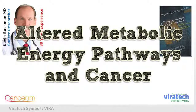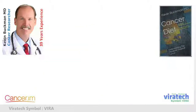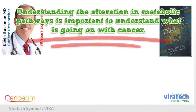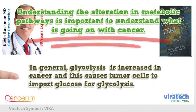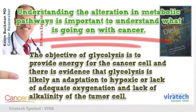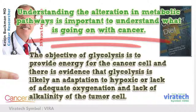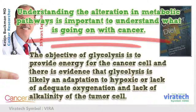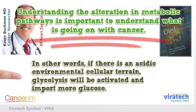Altered Metabolic Energy Pathways and Cancer. Understanding the alteration in metabolic pathways is important to understand what is going on with cancer. In general, glycolysis is increased in cancer and this causes tumor cells to import glucose for glycolysis. The objective of glycolysis is to provide energy for the cancer cell, and there is evidence that glycolysis is likely an adaptation to hypoxic conditions — lack of adequate oxygenation and lack of alkalinity of the tumor cell. In other words, if there is an acidic environmental cellular terrain, glycolysis will be activated and import more glucose.